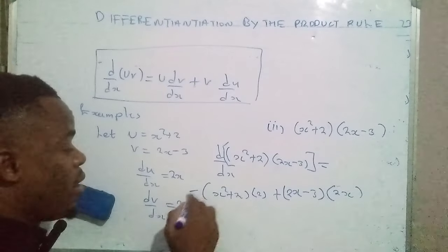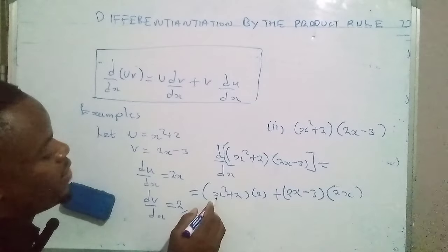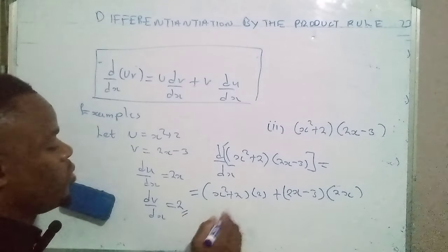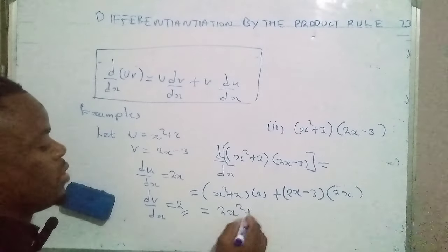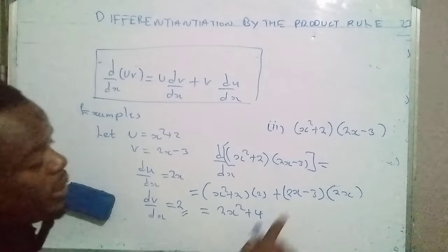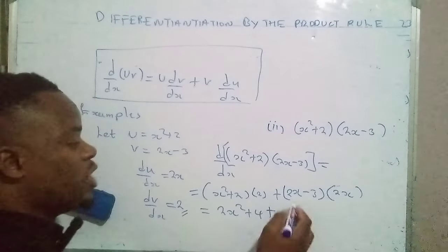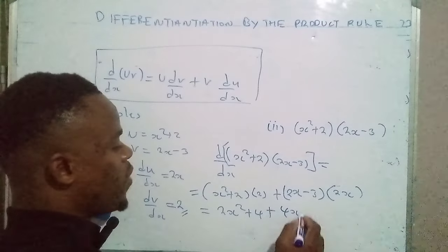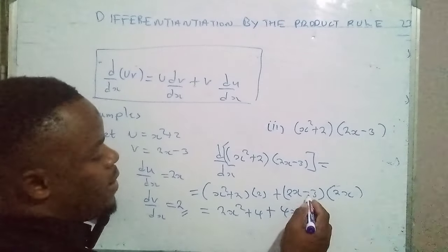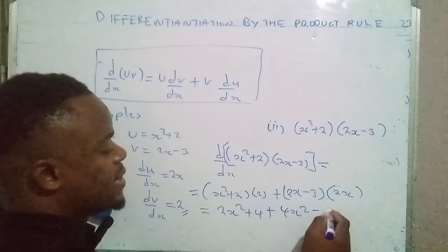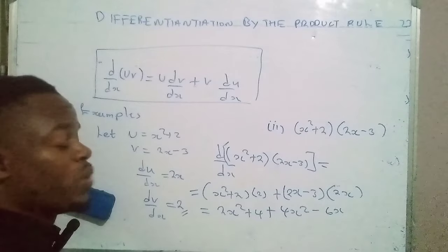We can now expand the brackets. x squared times two gives 2x squared, then two times two gives four. Then for the second bracket: 2x times 2x gives 4x squared, and negative three times 2x gives negative 6x.